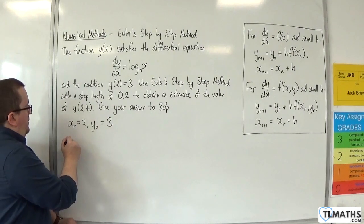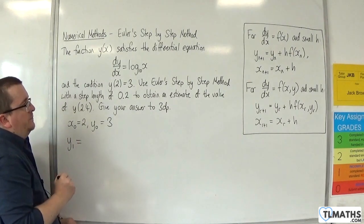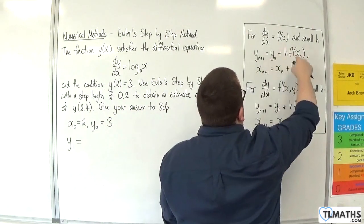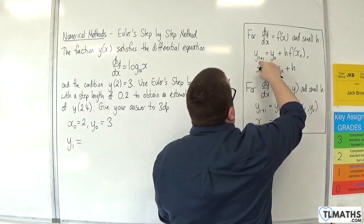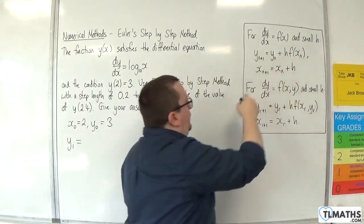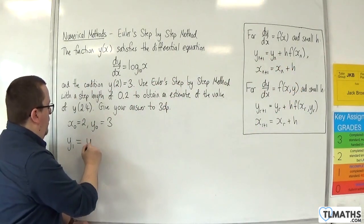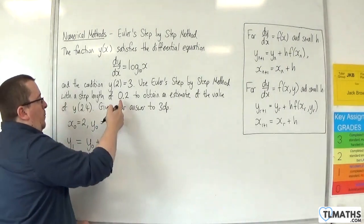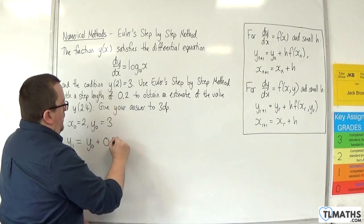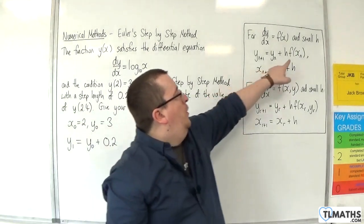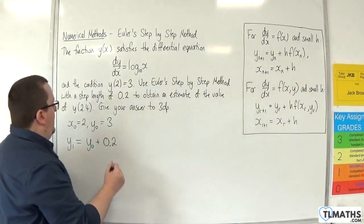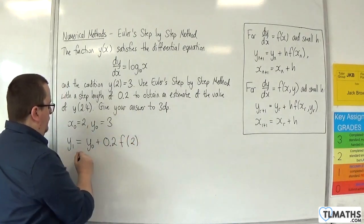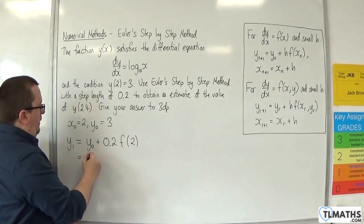We want to find y1. So we use our formula here. The next term in the sequence is the previous term, so y0, plus h, which is 0.2, times by f of x0. So that's f of 2.